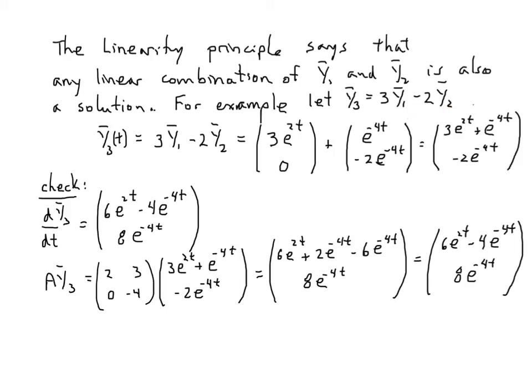3 times y1 gives 3e to the 2t and 0. Minus 2 times y2: y2 had minus one half in front, so multiplying by minus 2 gives positive 1. This had coefficient 1, now minus 2. Here's the linear combination, and we check.